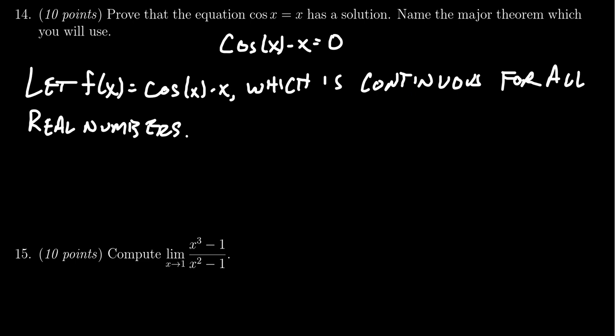The other thing we have to mention, because what our goal is, is we're trying to identify that the function is somewhere positive, somewhere negative. And so since it's continuous, the intermediate value theorem implies that there will be an x-intercept somewhere.